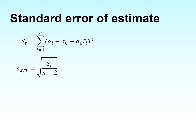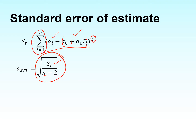The standard error estimate is defined as this quantity, where S_R is the sum of the square of the residuals divided by n minus 2, where n is the number of data points given to you. S_R is the sum of the square of the residuals — the vertical distance between observed and predicted values is the same thing as the residuals. So we subtract the observed from the predicted value, square each one of them, add all of them up, divide by n minus 2, and we get our standard error estimate.